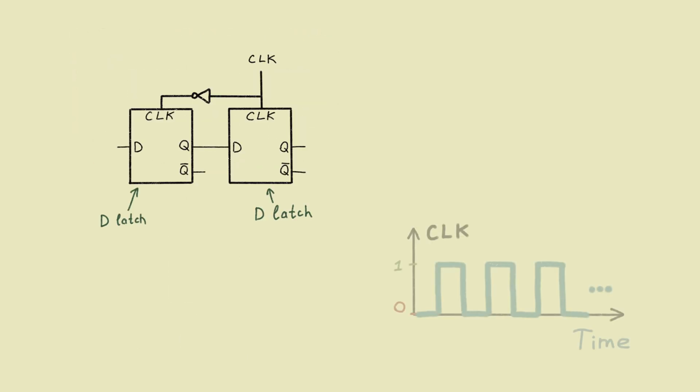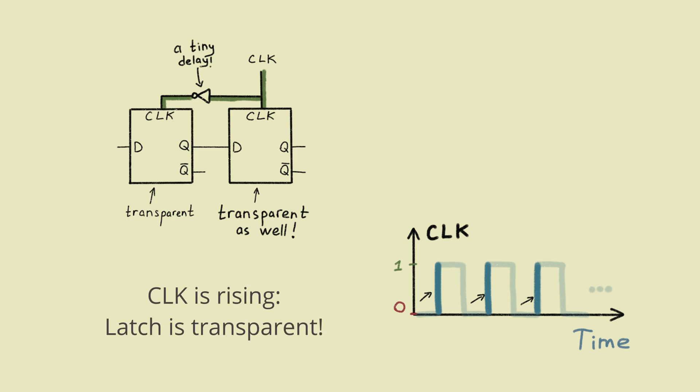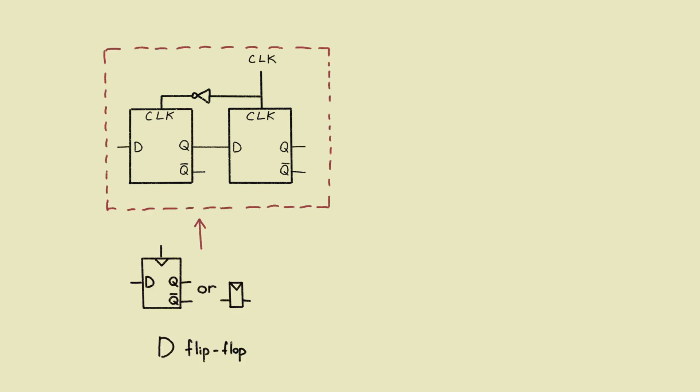Now we put two of them together. When the clock is high, the left one is opaque. When the clock is low, the right one is opaque. But look, when the clock is rising from 0 to 1, the right latch becomes transparent, and at the same time, the inverter introduces a tiny bit of delay. And for a moment, we have both latches transparent. Unlike the D latch, which is transparent only when the clock is high, that one is transparent only on the rising edge. So this one is called D flip-flop.